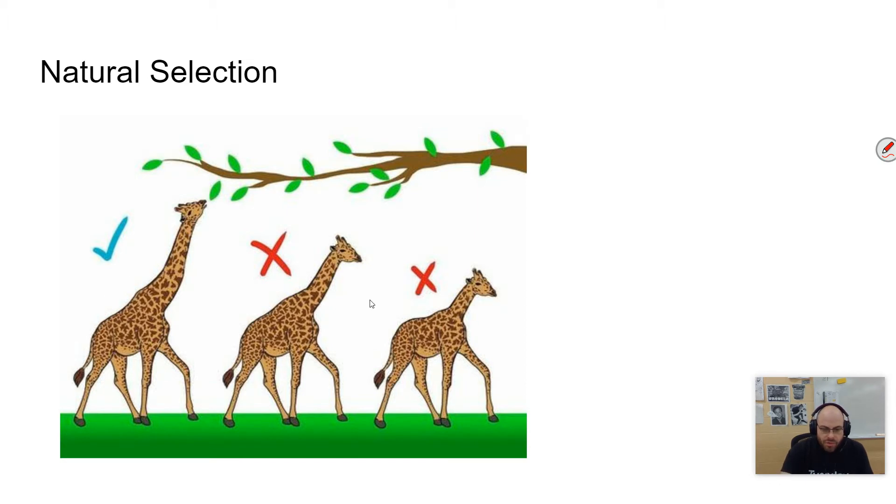So here you have some variation in giraffes. You have a little neck over here, you have the mama giraffe, and this is baby mama and daddy giraffe. In this case, the taller one is going to get the tree and is going to live and be able to pass its genes on to the next generation, whereas the shorter giraffes are not going to be able to do that. So you expect these shorter versions of the giraffe to die off over time because they're not able to get the food.